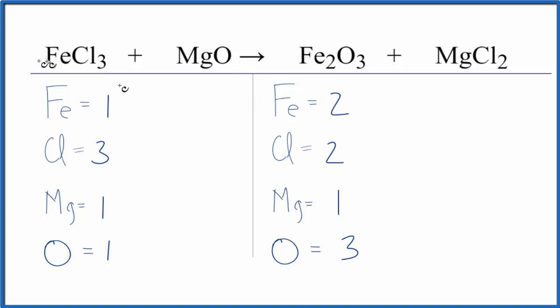Let's do the irons. We put a two here in front of the iron three chloride, one times two. That gives us two, so the irons would be balanced. Three times two gives us six chlorine atoms.